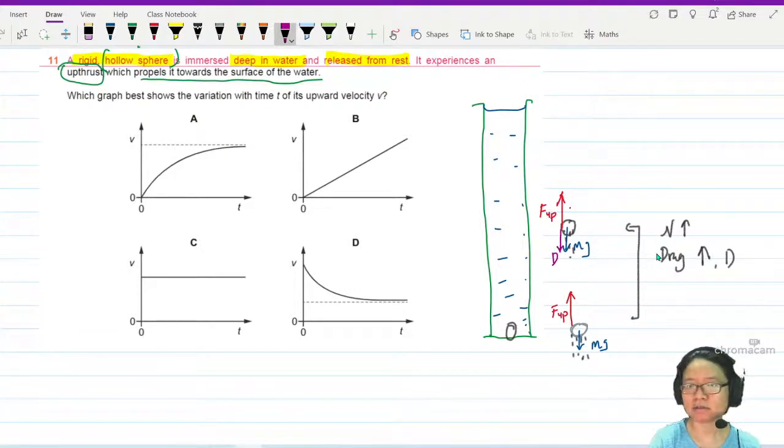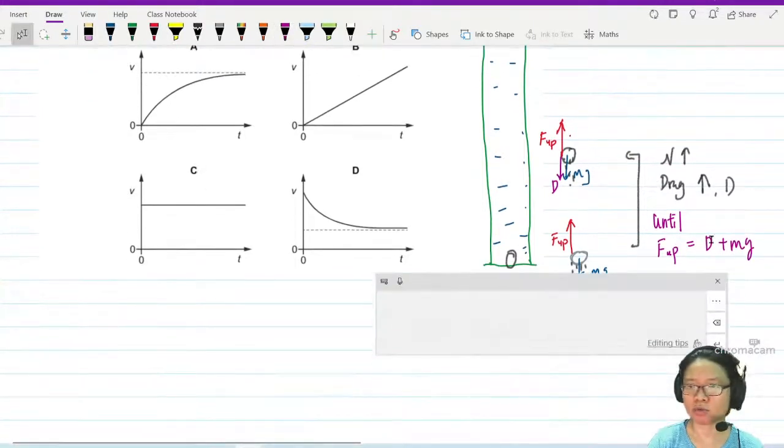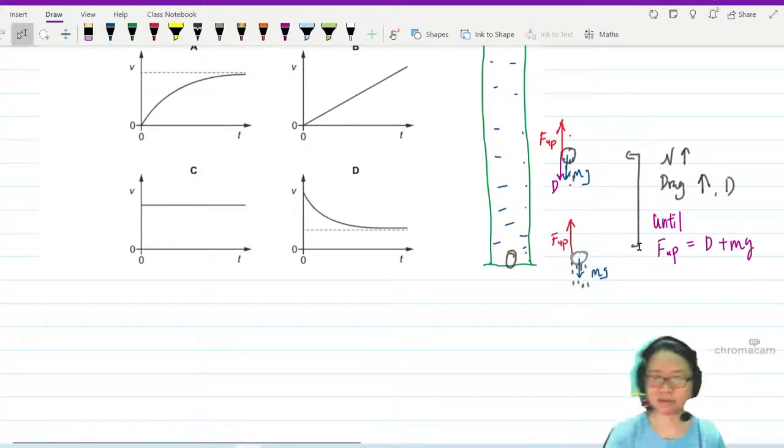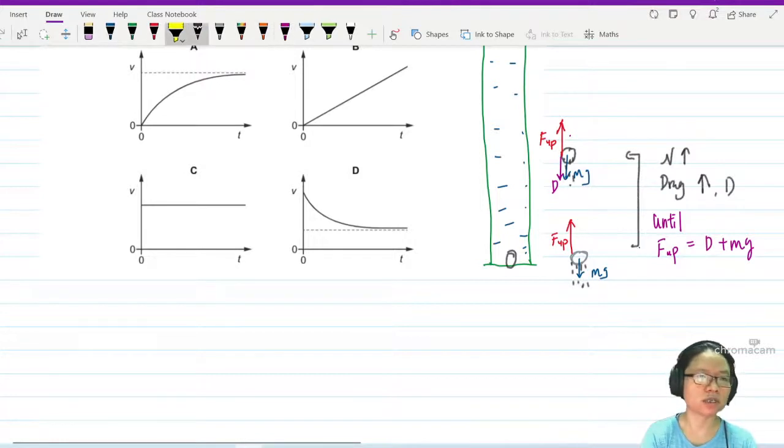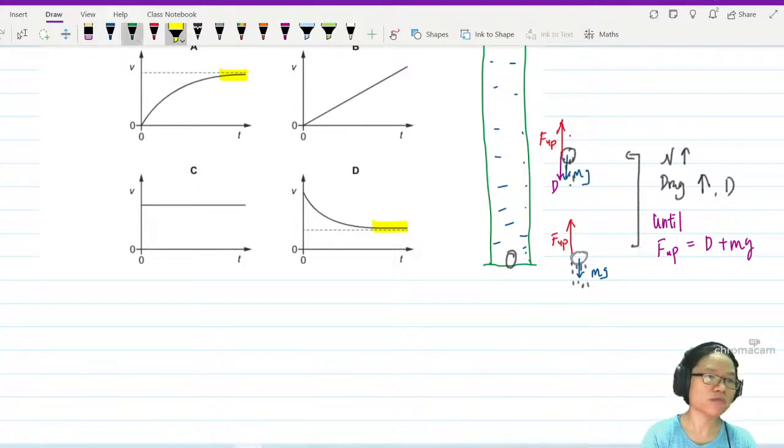Until net force is zero, uptrust is equal to drag force plus mg. When uptrust is equal to the combination of this one, then we have terminal velocity. That's why you have terminal velocity here. You have terminal velocity here. So obviously, C and B is out.